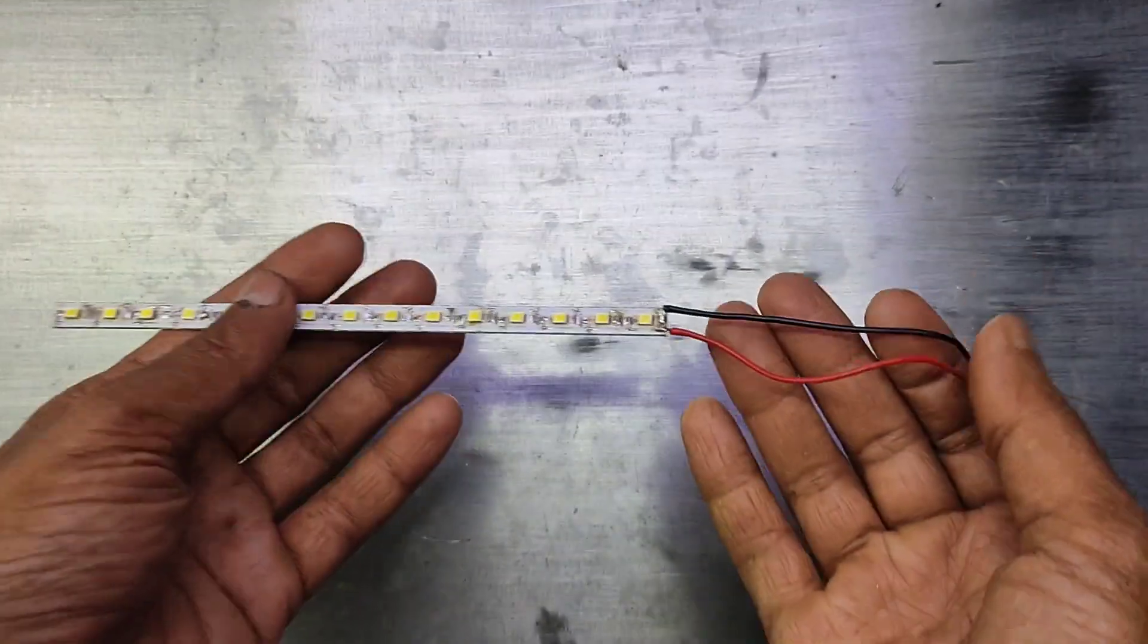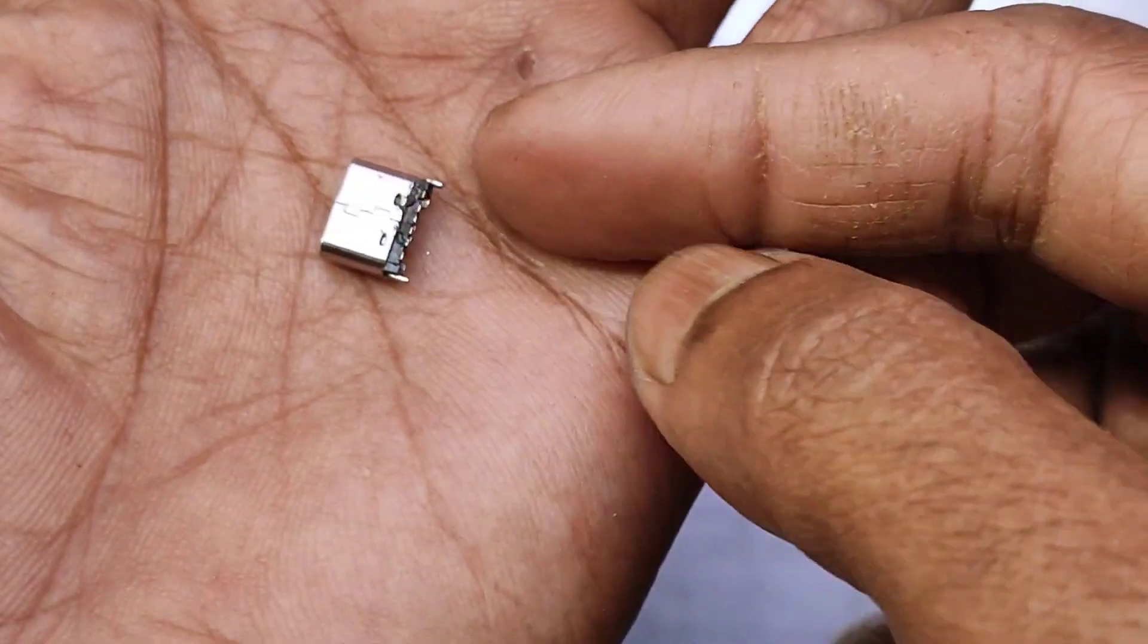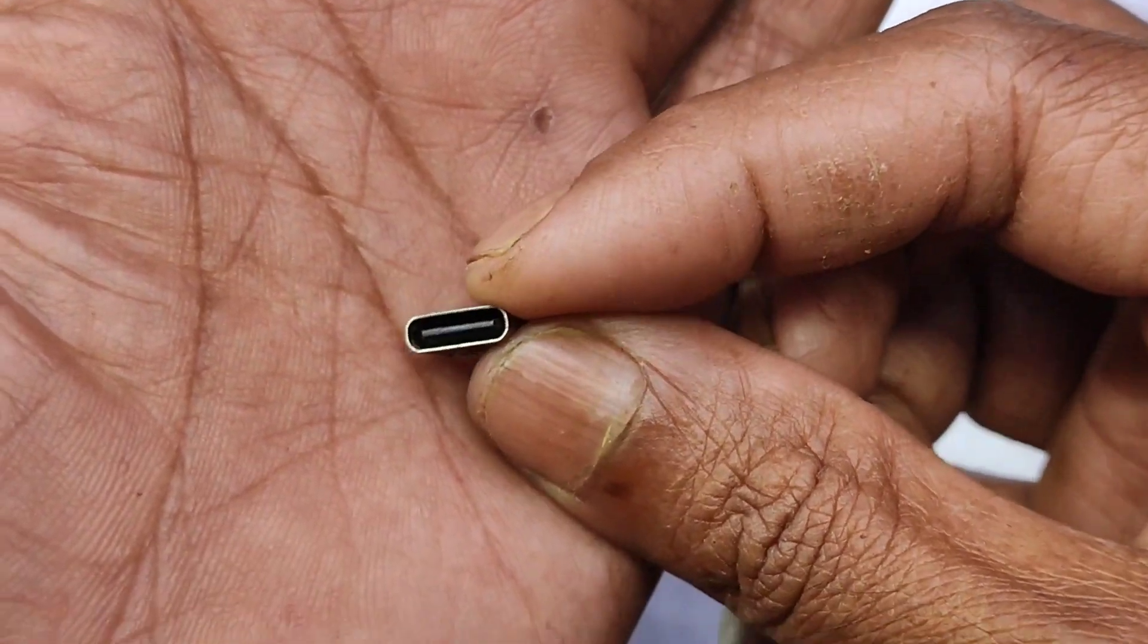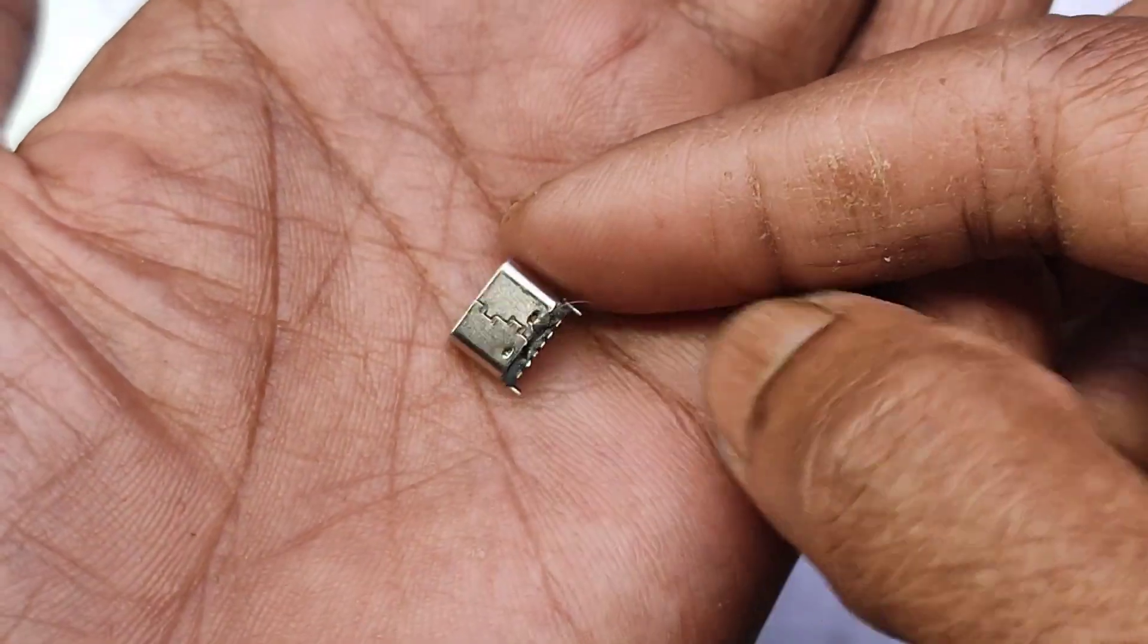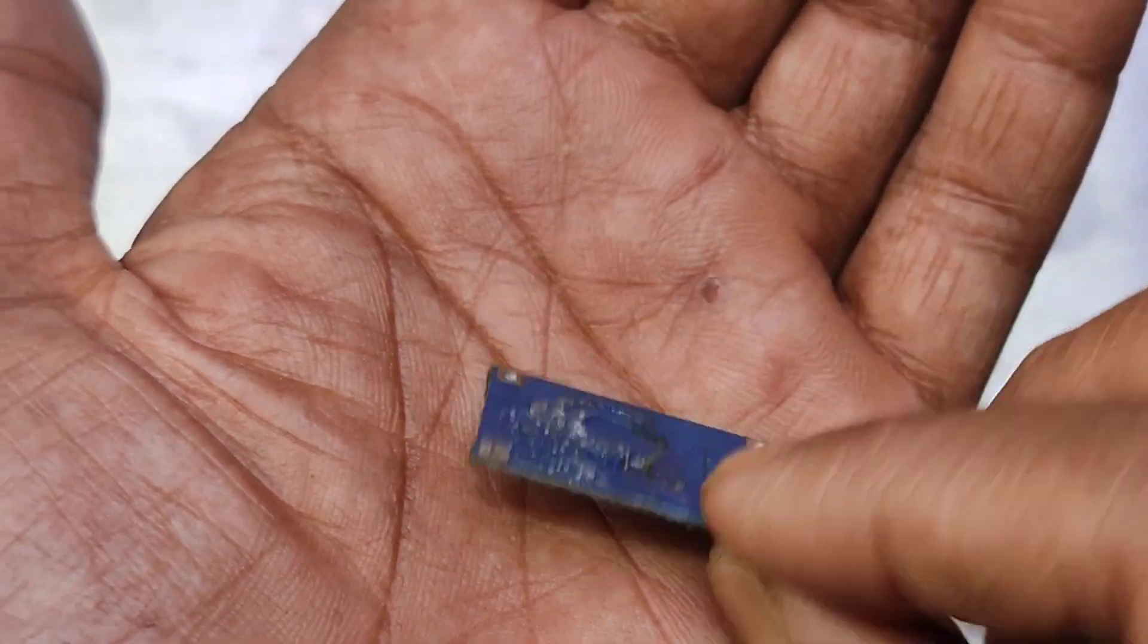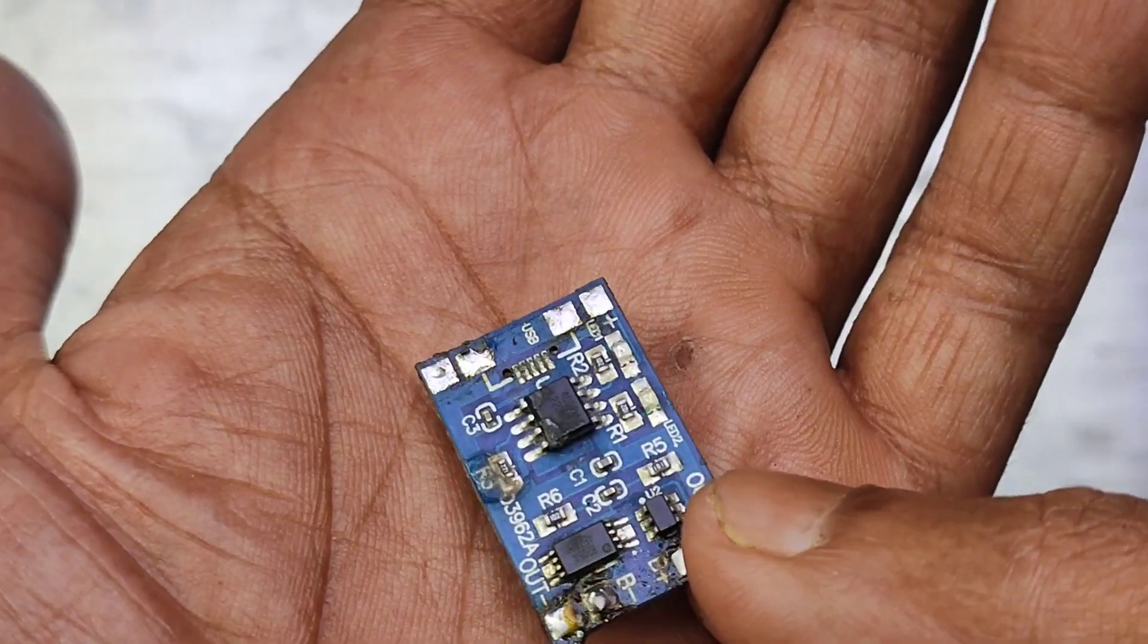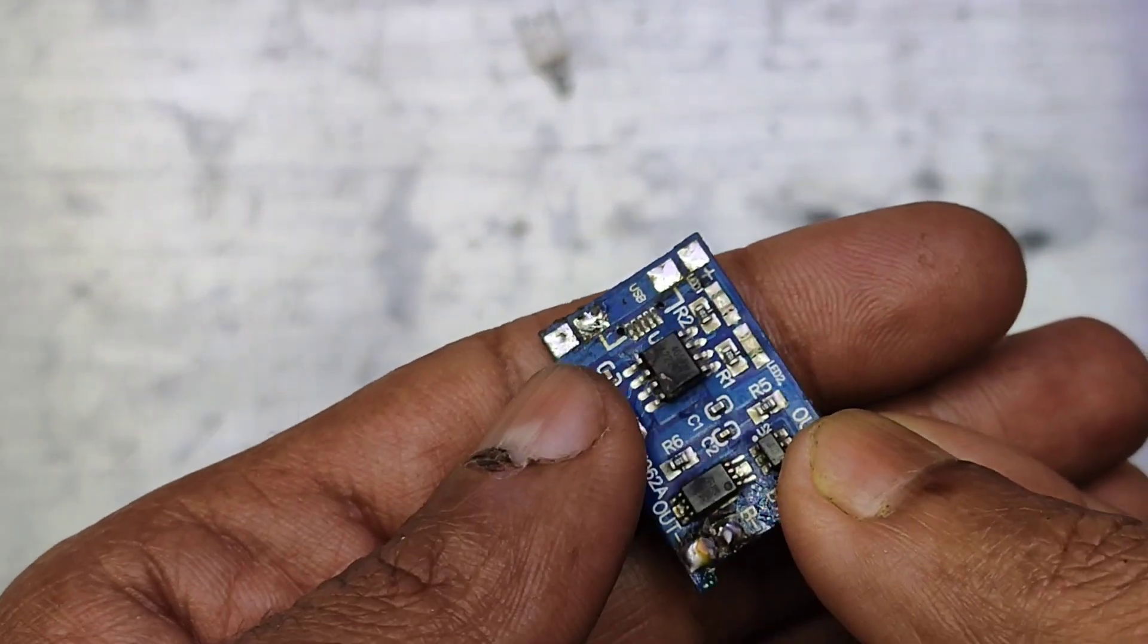This is a USB-C female connector salvaged from a broken wireless earbud case, and here is a TP 4056 lithium-ion battery charging module. I am using it to make the project safe. Its old micro USB connector is broken, so I will replace it with the USB-C connector.